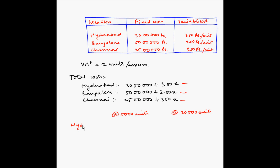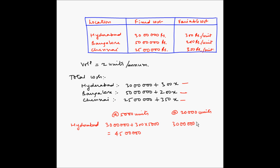For Hyderabad, the total cost at 5,000 units will be 30 lakhs plus 300 multiplied by 5,000, which equals 45 lakhs. At 20,000 units, it will be 30 lakhs plus 300 multiplied by 20,000, which equals 90 lakhs.